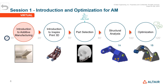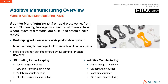What is additive manufacturing? Additive manufacturing is a method of manufacturing where layers of material are built up to create a solid object. This process can be used for prototyping solutions or for actual manufacturing of parts. 3D printing for prototyping can be used for rapid design iterations — it is low cost, useful for functional prototypes, and is a widely accessible solution.